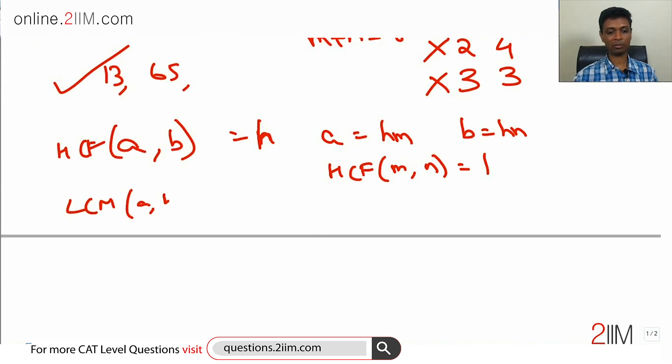LCM of a comma b is h into m into n. This idea is very important. Very often it is a starting step for a number of questions. HCF is h. I extract the HCF. What I am left with has to be coprime. I put that in and I can simplify, find LCM, product, all of that. All of those become very simple.